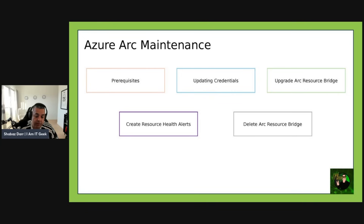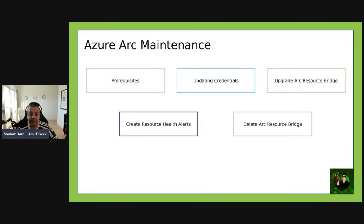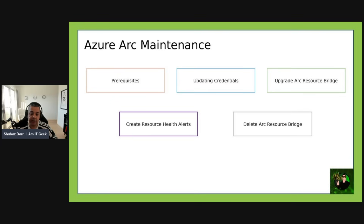The resource bridge consists of an on-premises appliance VM that stores credentials used to access the control plane of the on-premises infrastructure to view and manage on-premises resources. The credentials used by Azure Arc resource bridge are the same ones provided during deployment. Regarding upgrades, the resource bridge should be upgraded once every six months to refresh critical certificates within the appliance, which are required to maintain security and communications to Azure cloud. You can also create health alerts in the Azure portal to monitor the state of the Azure Arc resource bridge.